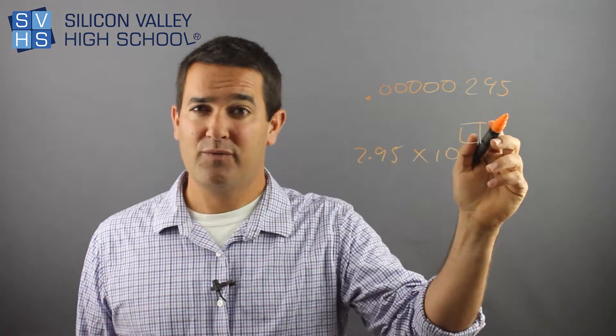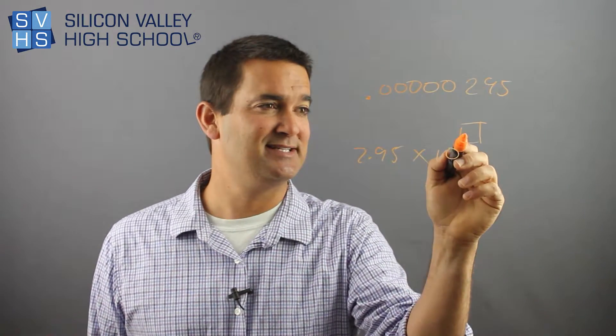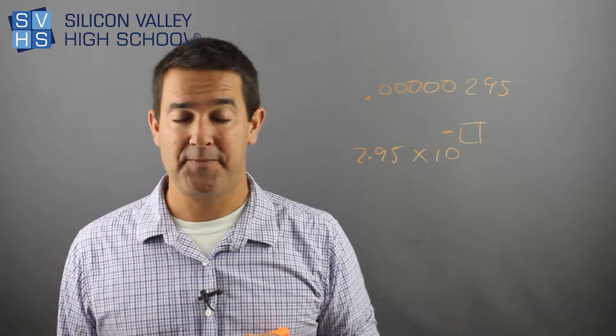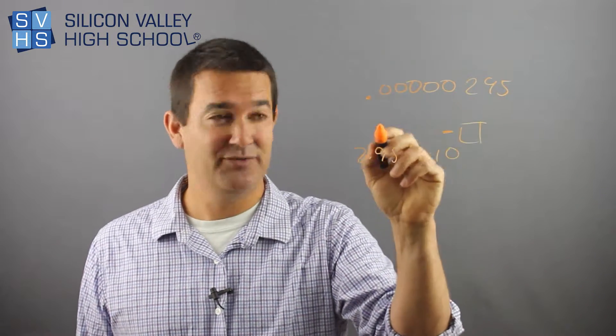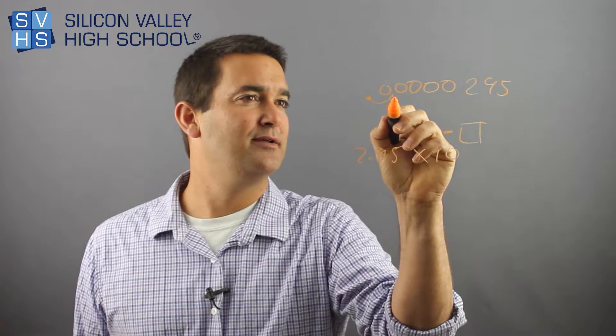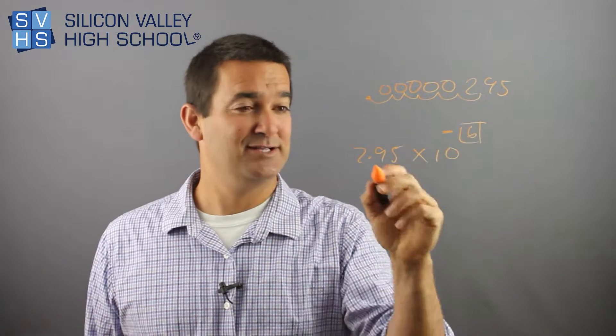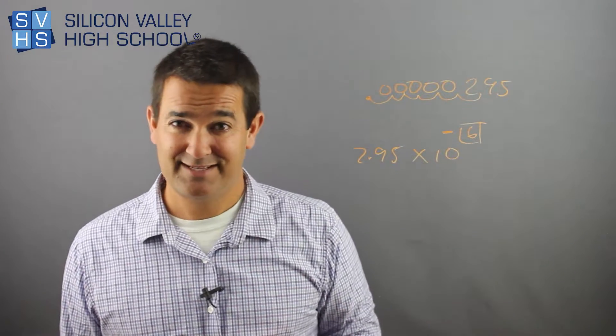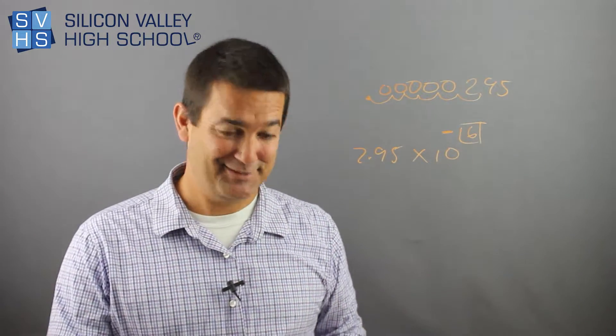Now, we know before we start, Ryan said that if it's a tiny number, which it is, this is a negative. I'm just going to put a negative in there now. And now, we want the decimal to end up here, right after the 2. So let's get it there. 1, 2, 3, 4, 5, 6 places. So it's 2.95 times 10 to the negative 6 because it's tiny. It makes sense. So this is pretty easy.